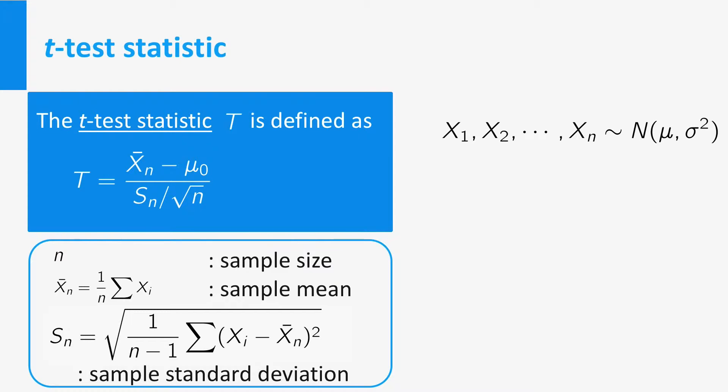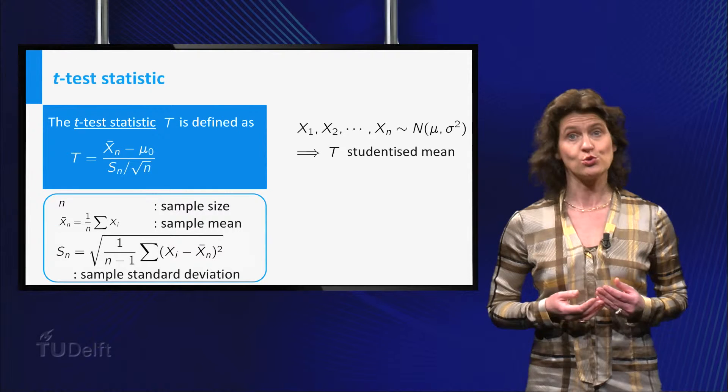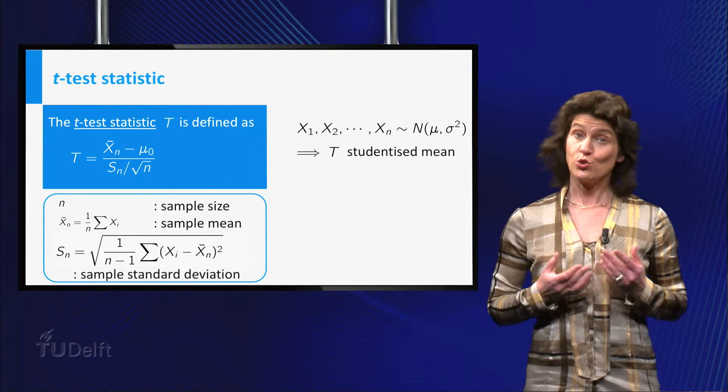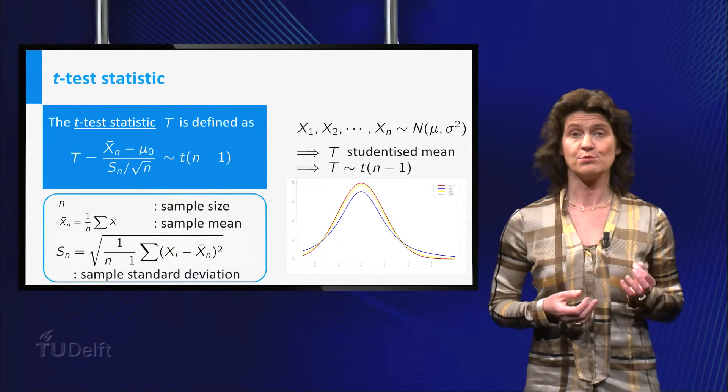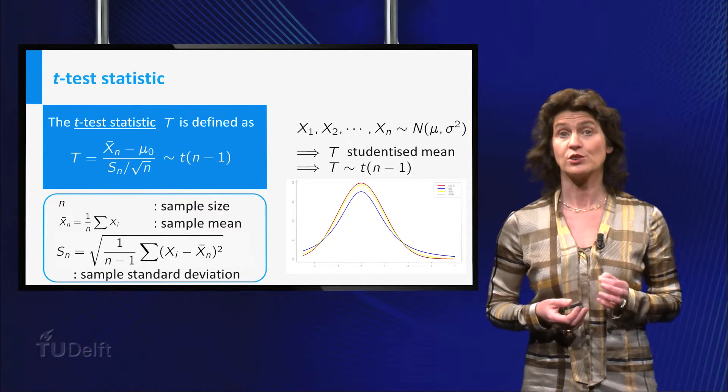Now remember the data were supposed to be representations of normally distributed random variables. This implies that t is in fact the studentized mean introduced to you before. So you know it has a t-distribution with n minus 1 degrees of freedom.